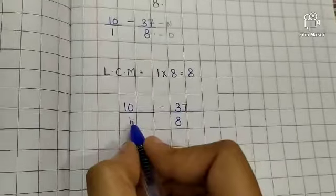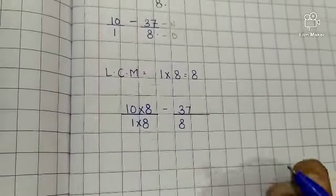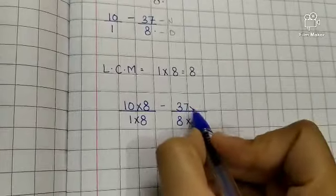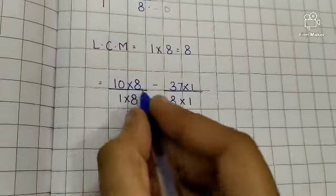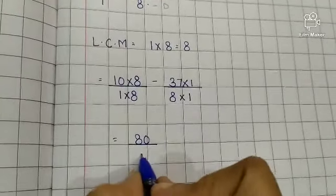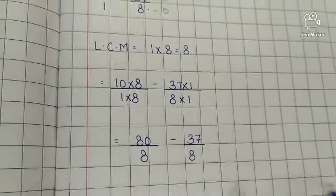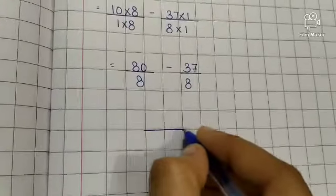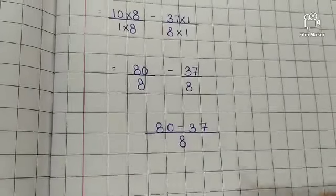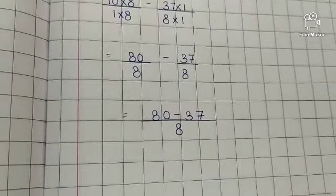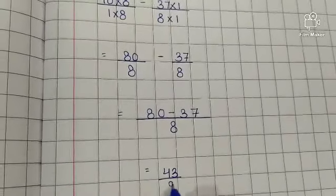Now 10 upon 1 minus 37 upon 8. To make the denominator 1 into 8 — 8 eights are 8, so multiply numerator also. And 8 to make 8, multiply by 1. So numerator and denominator we multiply by the same number. Now 10 eights are 80 upon 1 eight is 8, minus 37 ones are 37 upon 8 ones are 8. Now denominator is same, so we will simply subtract the numerator: 80 minus 37.